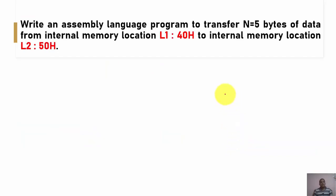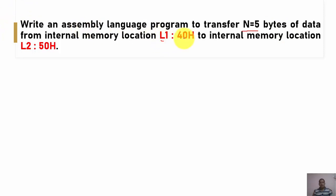We are given this program statement: write an assembly language program to transfer n = 5 bytes of data from internal memory location L1, that is from 40H onwards, to internal memory location 50H onwards.